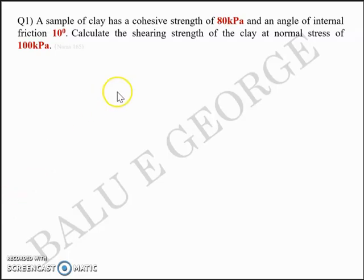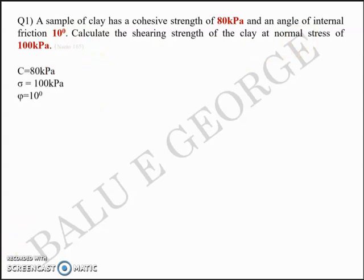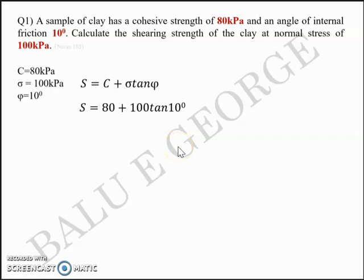The data given is C equal to 80 kilopascal, phi (angle of internal friction) equal to 10 degrees, and normal stress sigma equal to 100 kilopascal. We need to find the shear strength. Using the Mohr-Coulomb formula: shear strength S = C + sigma tan(phi). Substituting: 80 plus 100 times tan(10 degrees). The answer is 97.6 kilopascals.